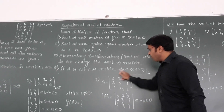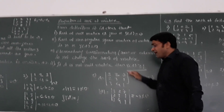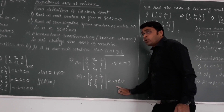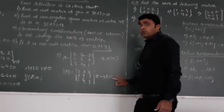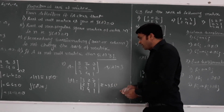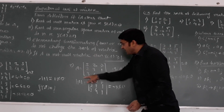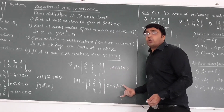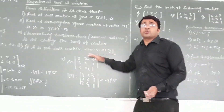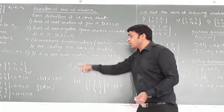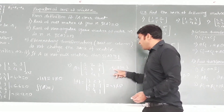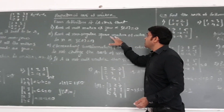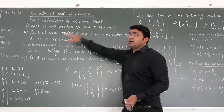For example, we have a matrix of order 3 by 3. I calculate the determinant value and it comes out to be minus 8, which is not equal to 0. When the determinant value is non-zero, the matrix is called a non-singular matrix. It is having order 3, therefore the rank will be 3 — which confirms the property: rank of a non-singular square matrix of order n is n.